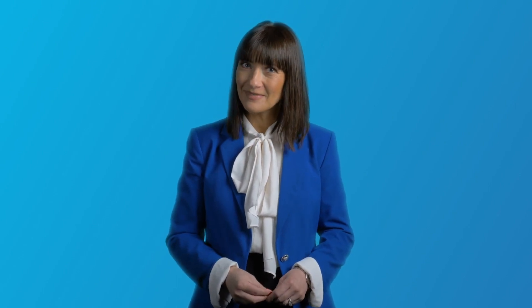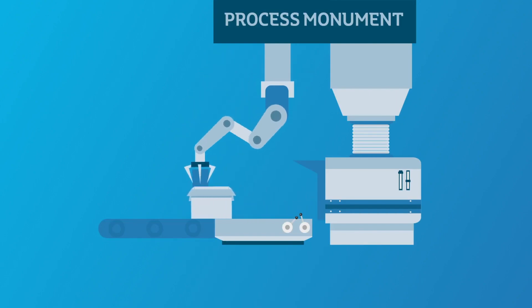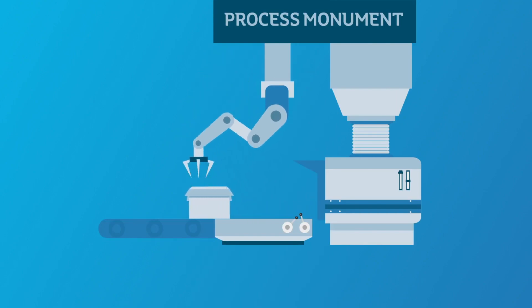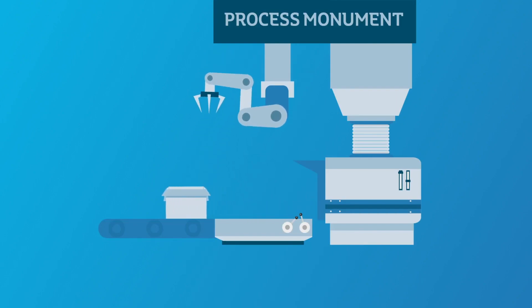A process monument is a unit or piece of equipment that cannot be moved. The location of your process monuments, just like receiving and dispatch areas, will have a strong influence on the rest of your layout.